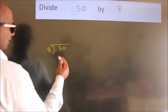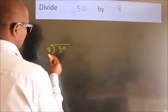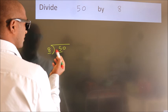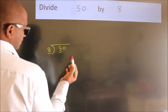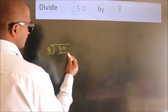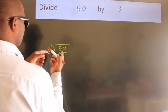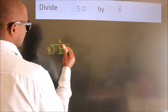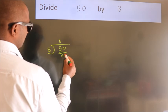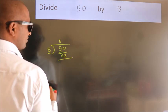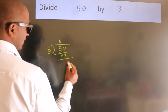Next. Here we have 5, here 8. 5 is smaller than 8, so we should take two numbers: 50. A number close to 50 in the 8 table is 8 times 6, which is 48. Now we should subtract. We get 2.